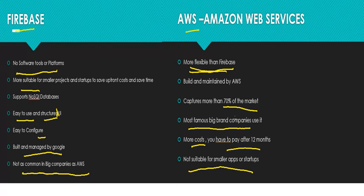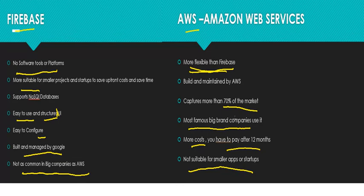So those are some of the key differences between Firebase and Amazon Web Services. AWS is from Amazon, Firebase is from Google. It depends on what you need: if you need something small, developing your first app or a small startup, Firebase is enough. If you're a big company needing infrastructure, platforms, tools, and more flexibility in connecting things together, then Amazon Web Services is the best choice for you.